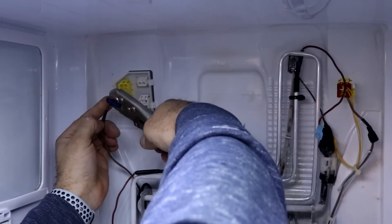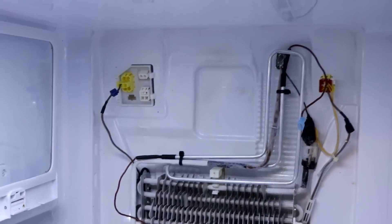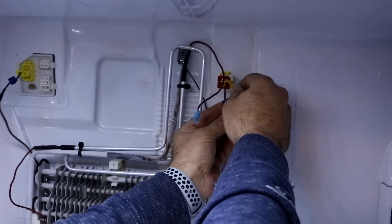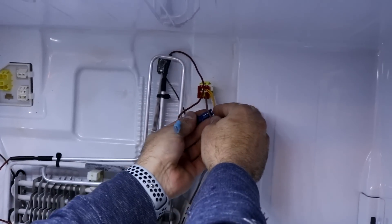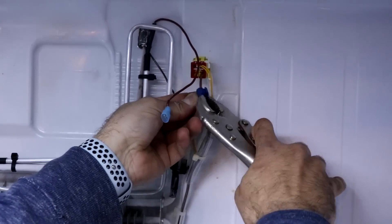Basically, you're going to crimp it onto the existing wire on the left hand side to the defrost heater. Then with the second one, it's going to go on the right hand side, and this is the line coming off your defrost heater in the fridge section on your Samsung.